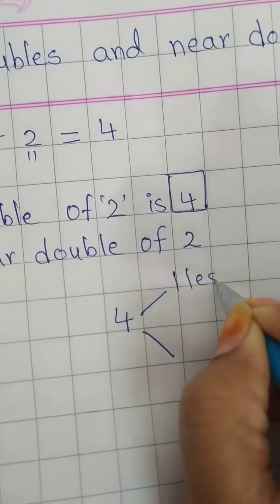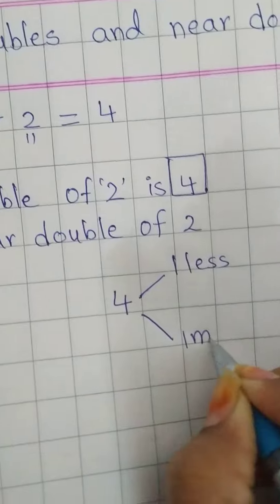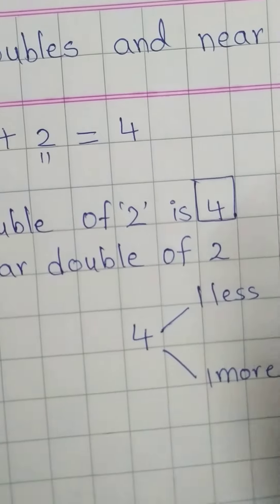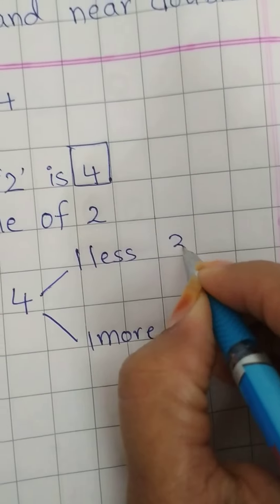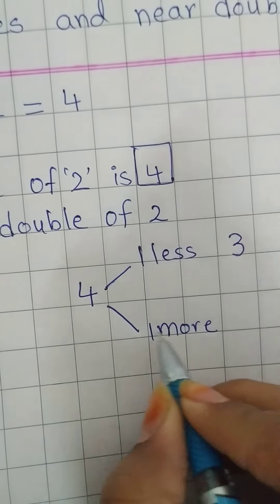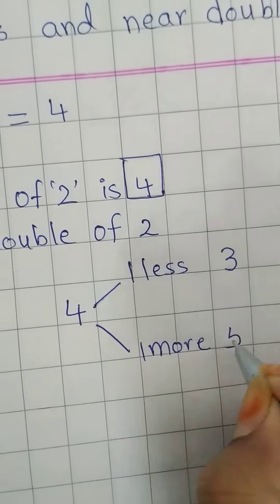Then, 1 less and 1 more. 1 less to 4 is 3. And 1 more to 4 is 5.